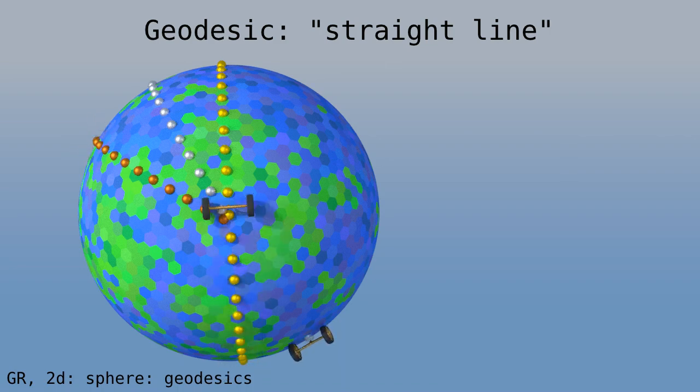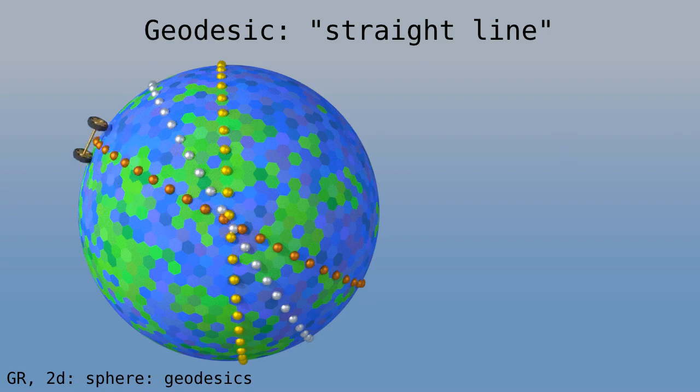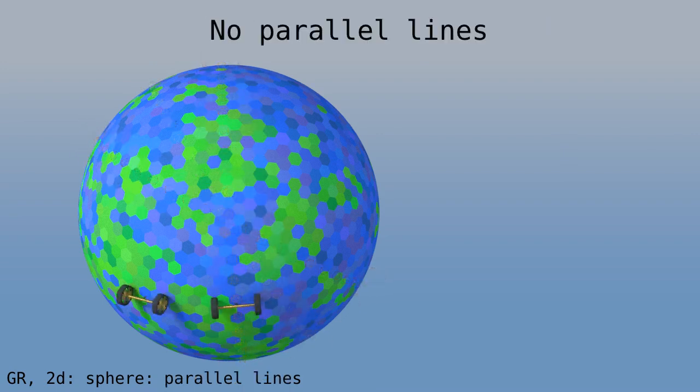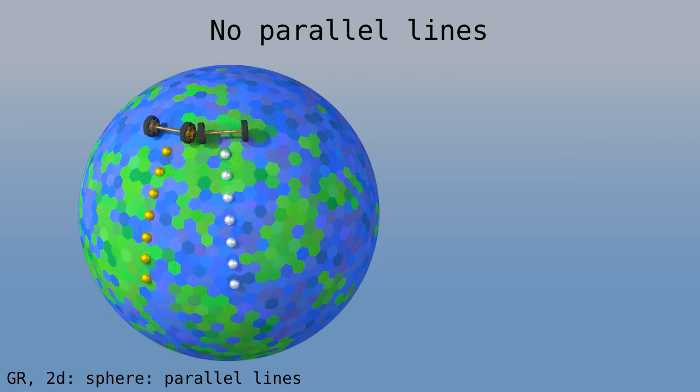In relativity, objects moving in gravity and feeling no other forces follow geodesics. Now, on the plane, we saw that two carts that point in the same direction remain parallel. But this is not the case on a curved surface. These two carts start out parallel at the equator, but when they move north, they get closer and finally collide.